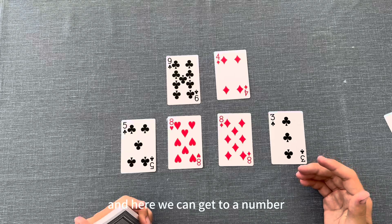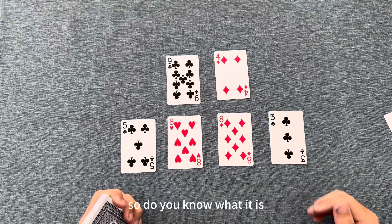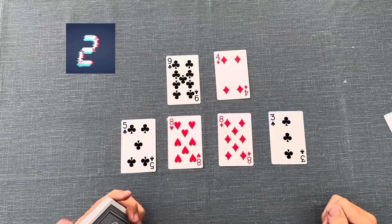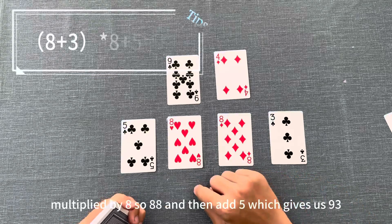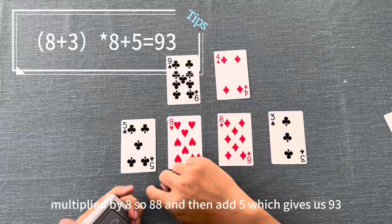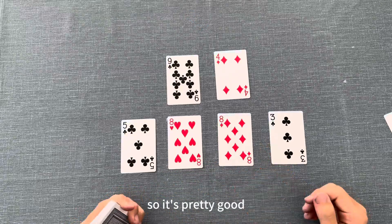Here we can get to a number that's only 1 away from 94. Do you know what it is? 8 plus 3, which is 11, multiplied by 8, so 88, and then add 5, which gives us 93, which is only 1 away, so it's pretty good.